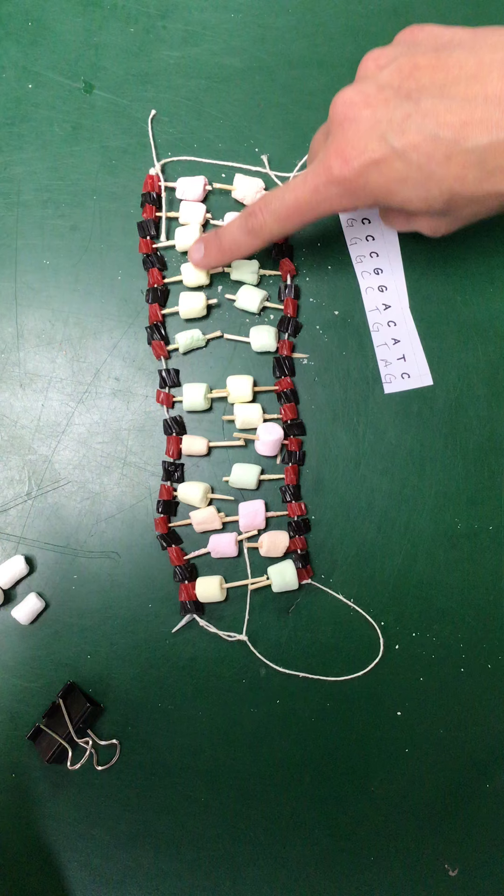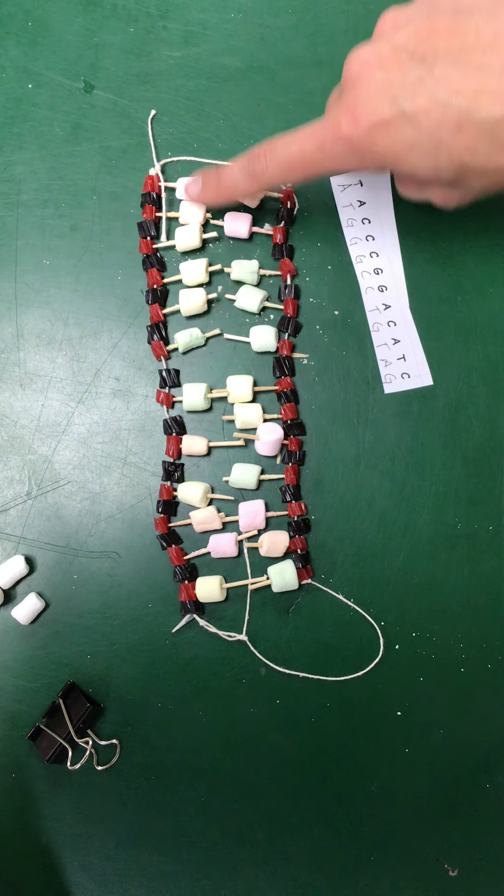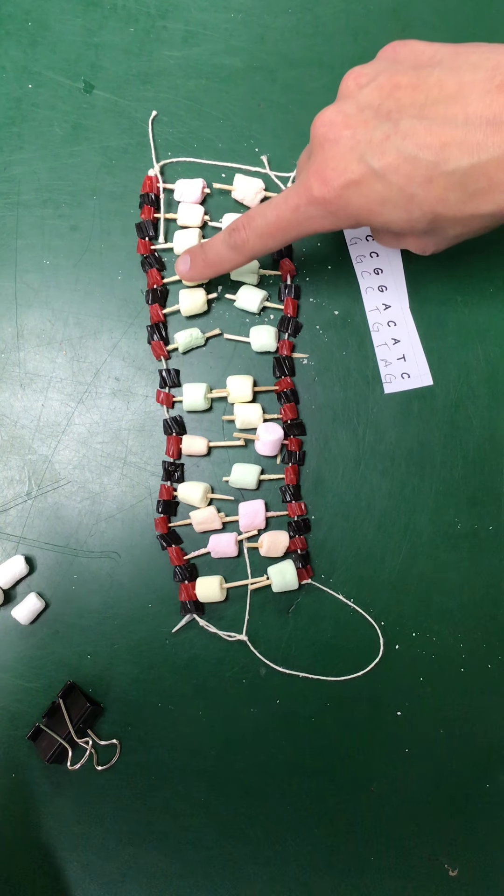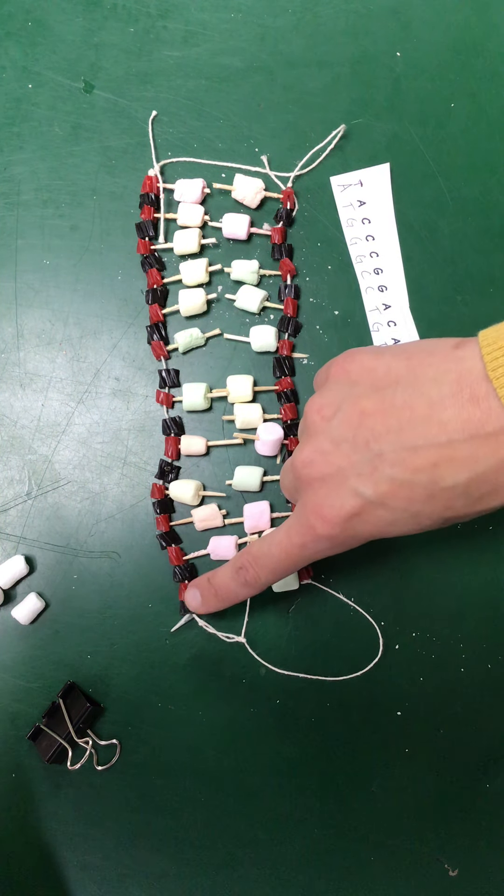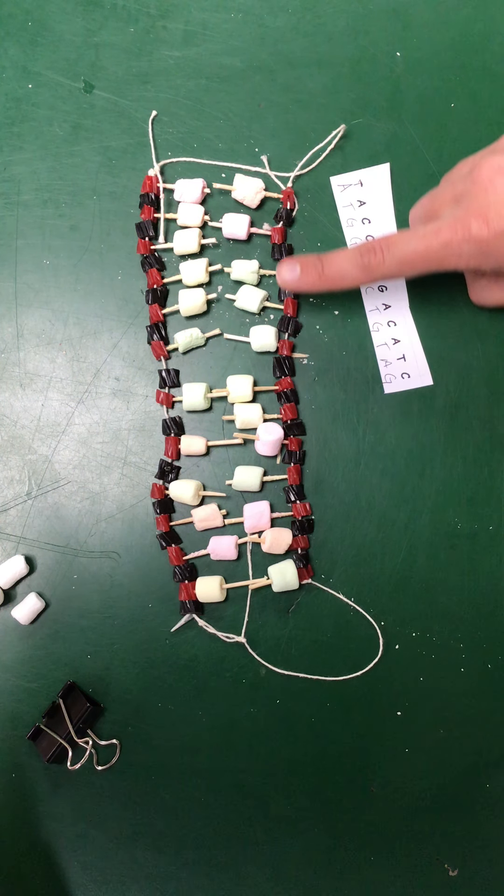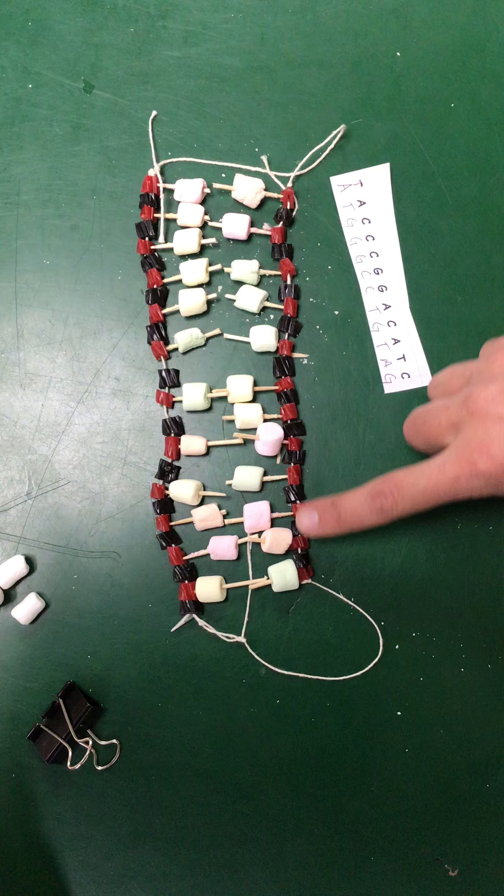pinks are T's, oranges are A's, yellows are C's, and greens are G's. So this goes T-A-C-C-C-G-G-A-C-A-T-C, and then they did the complementary bases on the other side, all connected by the backbone to the DNA.